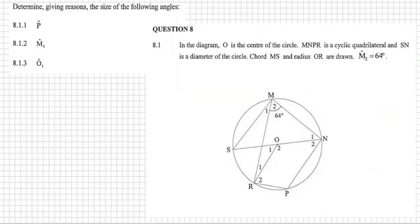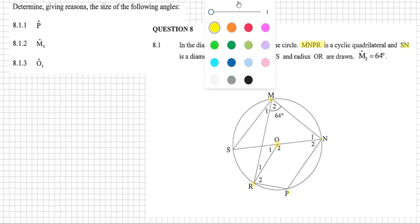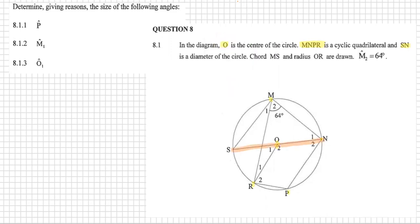Question 8, the information: O is the center of the circle, MNPR is a cyclic quad, and SN is the diameter. That's the diameter. Chords MS and OR are drawn, and M2 is equal to 64, and that's given.